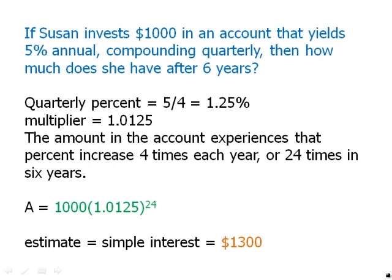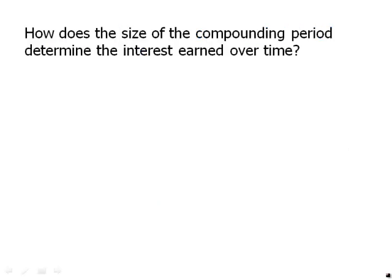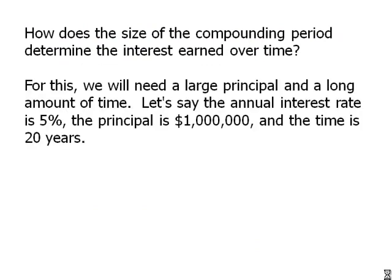How does the size of the compounding period determine the interest earned over time? To see this clearly, we need a large principal and a long amount of time. Let's say the annual interest rate is 5%, the principal is $1,000,000, and the time is 20 years — really pumping up both the amount and the time to look at these subtle differences.